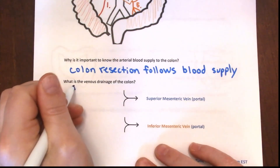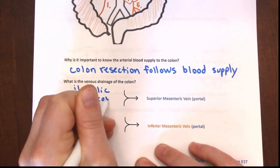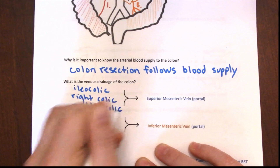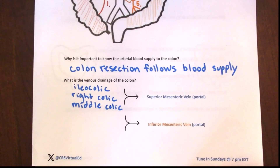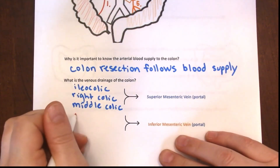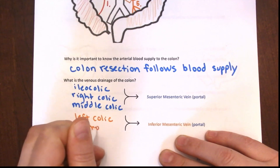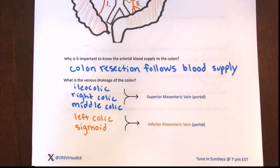The venous drainage of the colon has names very similar to the arteries. The ileocolic, right colic, and middle colic veins drain into the superior mesenteric vein (SMV), which then empties into the portal circulation. Similarly, the left colic and sigmoid veins drain into the inferior mesenteric vein (IMV), which also empties into the portal circulation. This is why metastatic colon cancer often goes to the liver first.